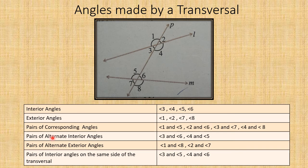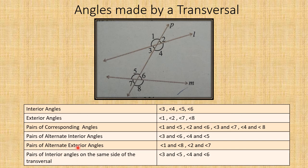Similarly, pairs of alternate angles — we have these inside and outside as well. First, alternate interior angles: angle three and angle six are called alternate interior angles, and angle four and angle five are also called alternate interior angles. Next, alternate exterior angles: angle one and angle eight, and angle two and angle seven are called alternate exterior angles.